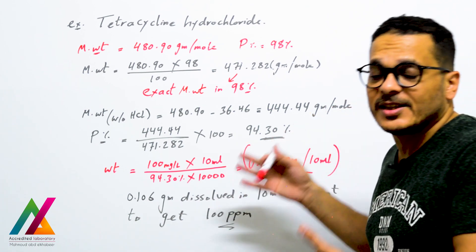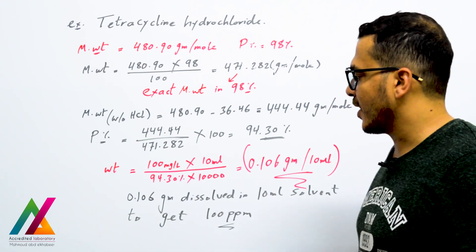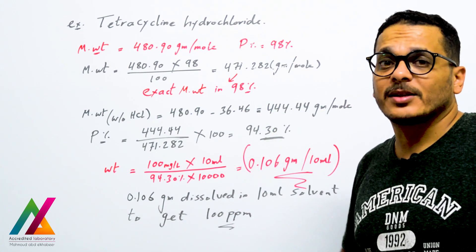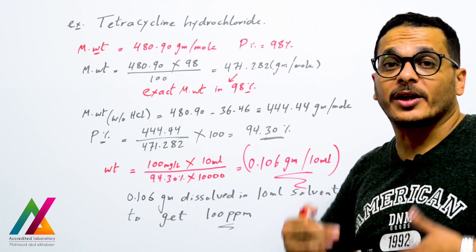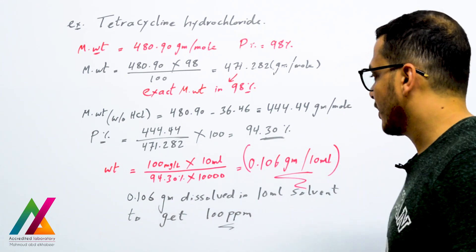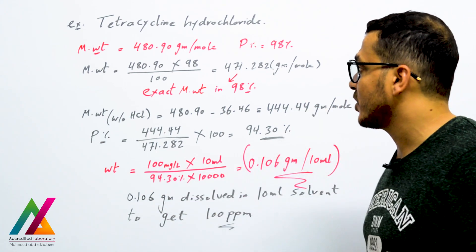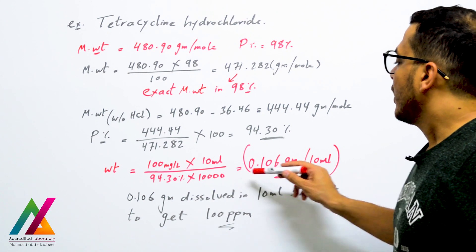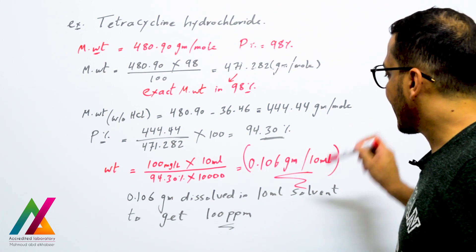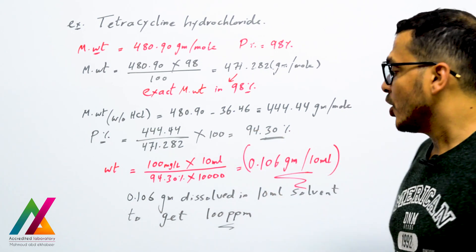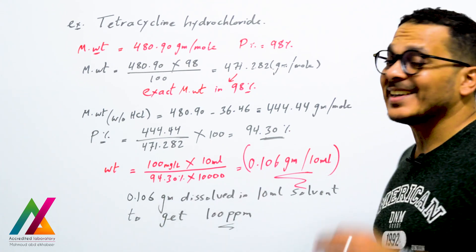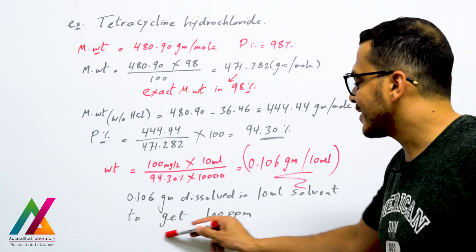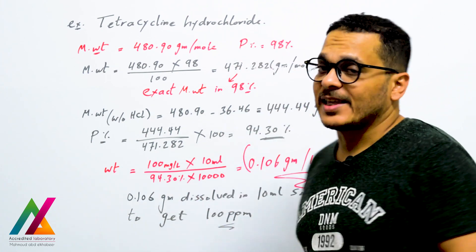You will use this exact purity in the weight equation to prepare the stock solution from the powder standard. For example, to prepare 100 ppm (100 mg/L) in a 10 ml flask: Weight = (100 mg/L × 10 ml) / (94.3 × 10,000) = 0.106 g. So if you dissolve 0.106 g of your powder tetracycline standard in 10 ml of suitable solvent, you will get 100 ppm of this standard.